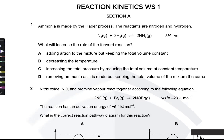Adding argon at constant volume increases the number of particles, so you get higher pressure. That doesn't really allow the forward reaction to happen much. Decreasing the temperature will cause the equilibrium to try to increase the temperature, driving the reaction forward. However, decreasing temperature also reduces the kinetic energy of particles, so it will decrease the rate overall. It increases yield but decreases rate.